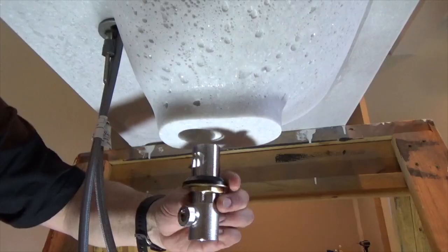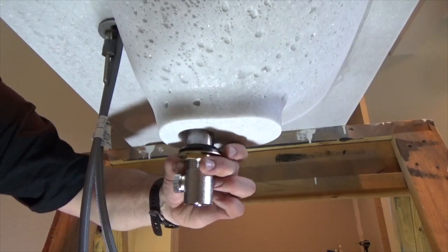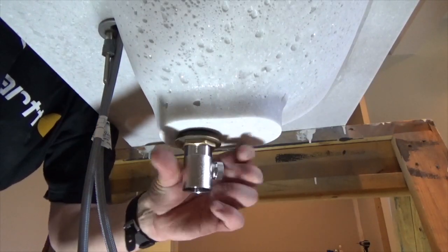Next, access the drain hole from underneath. Take the drain body and thread it into the flange through the sink drain hole.